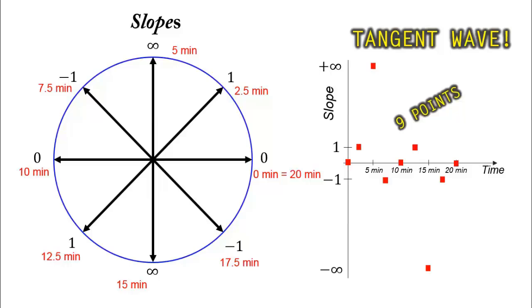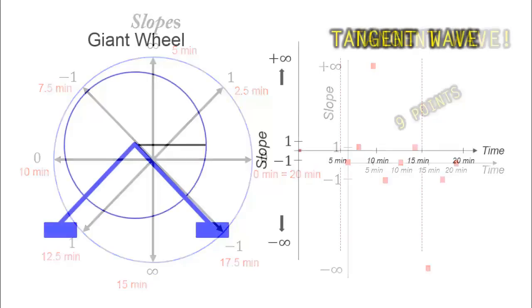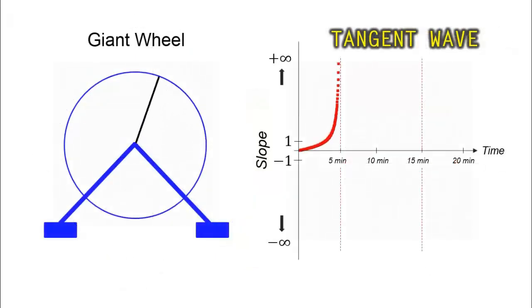But in this plot, I only took 9 data points to explain the concept to you, so the plot doesn't look complete. If I plot slopes continuously as the wheel rotates, this is what you get, a tangent wave. So again, the tangent wave plot is actually the slope varying as the wheel rotates.